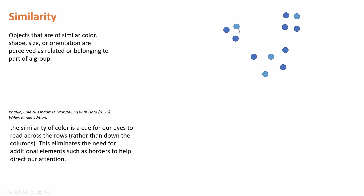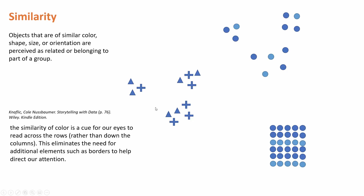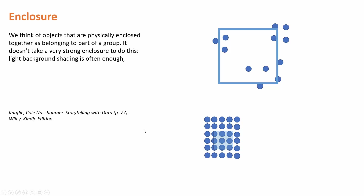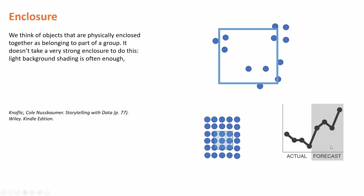We also have similarity — when objects have the same shape, we consider them as belonging together, but when they differ in shape, size, or orientation, we can distinguish between them. Sometimes we physically enclose parts of a visual by providing a border, creating an assumption that this information is grouped together — even in a matrix. A great example is forecasting in a time series, where a border indicates this part is the forecast and this part is actual data.